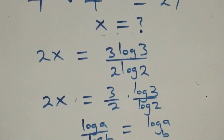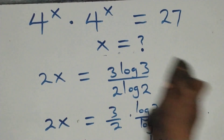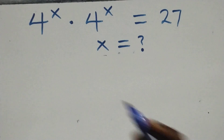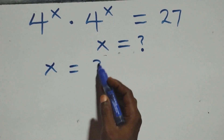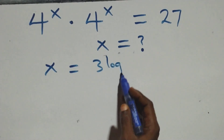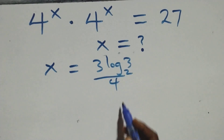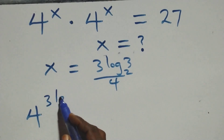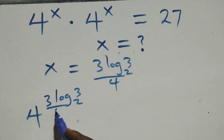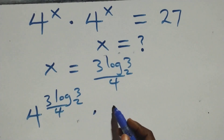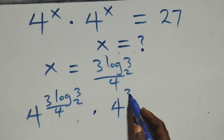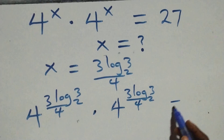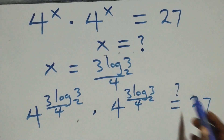Let's check whether this satisfies the given problem. We substitute the value x equals three log base two of three over four. What we have becomes four raised to the power three log base two of three over four, times four raised to the power three log base two of three over four, and check if this equals twenty-seven.